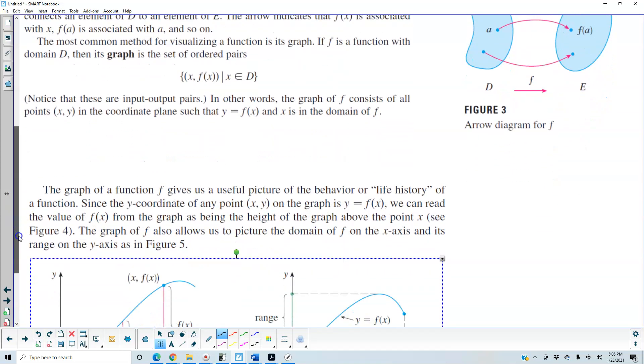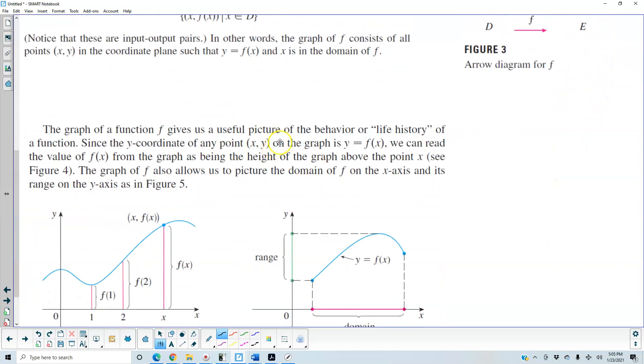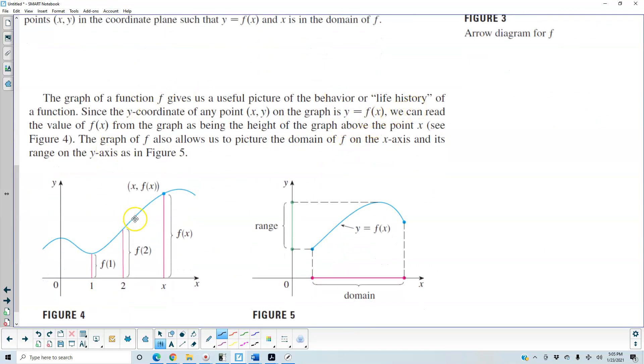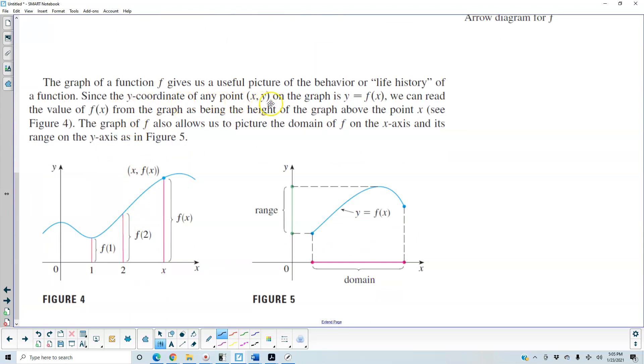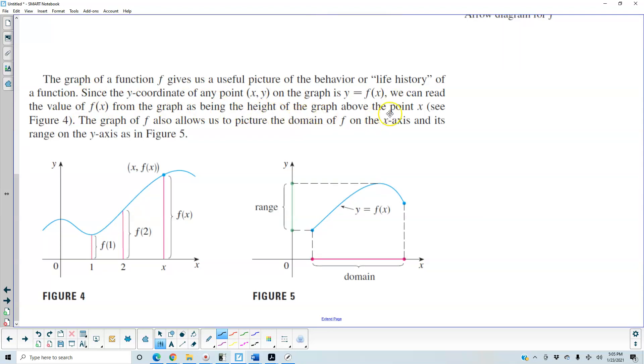Now the graph of a function f gives us a useful picture of the behavior or life history of a function. Since the y coordinate of any point x, y on the graph is y is equal to f of x, we can read the value of f of x from the graph as being the height of the graph above the point x. If we look at figure 4 we can see that here 0, 1, 2, and x. So the height up here of the function represents the height at 0. 1 is the input and then the height represents f of 1. This is the input and then the height represents f of 2. Here's the input x and the height is f of x.